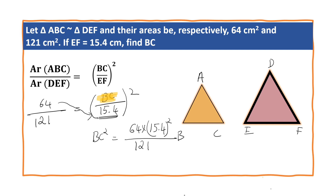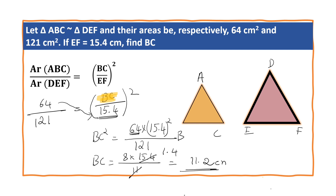Let us take the square root on both sides. BC is equal to the square root of 64, which is 8, times 15.4, whole squared, upon 121 — and the square root of 121 is 11. So 15.4 divided by 11 gives 1.4, and 8 times 1.4 equals 11.2 cm. Therefore, BC is equal to 11.2 cm.